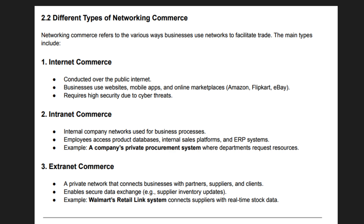E-commerce operates on various networking models, each serving a specific purpose in digital trade. The internet is the primary medium for online stores, marketplaces, and digital payment systems. An intranet is a private network within an organization enabling secure communication and data sharing. An extranet extends an intranet to external partners, suppliers, and stakeholders for B2B transactions. Virtual private networks provide secure access to business networks from remote locations.